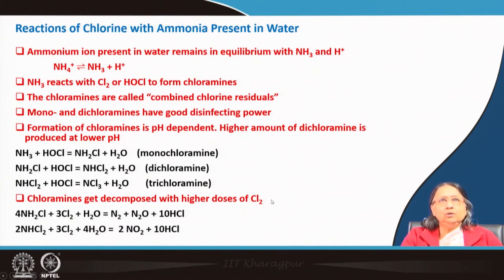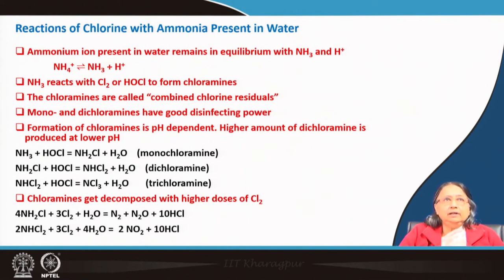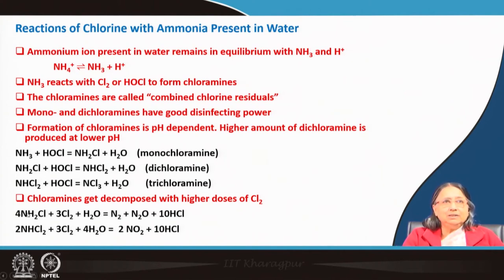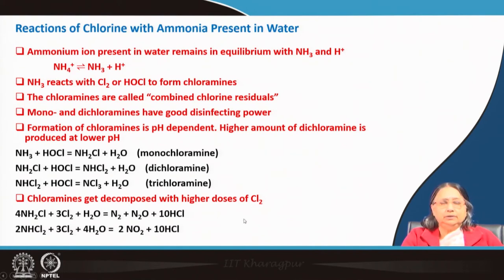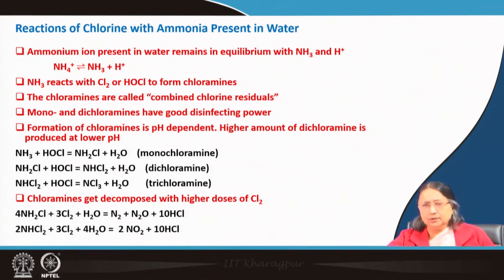Chlorine is a very good oxidizing agent. If you increase the dose of chlorine, then the chloramines will also be oxidized. You can see the oxidation states: nitrogen goes from −3 to 0 in monochloramine oxidation, and in dichloramine oxidation it goes from −3 to +4. This occurs at a higher dose of chlorine — if you increase the concentration of chlorine, these oxidation reactions will happen.